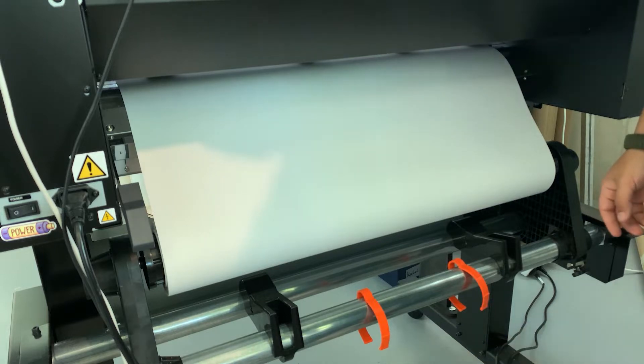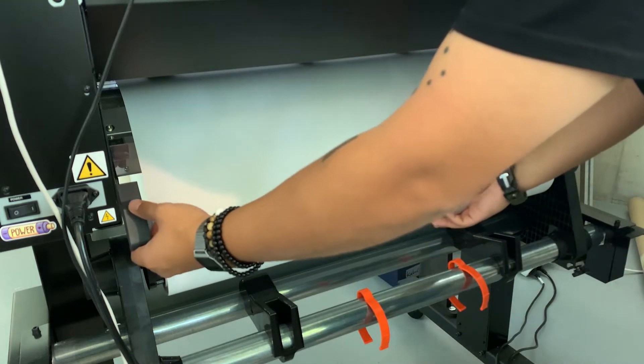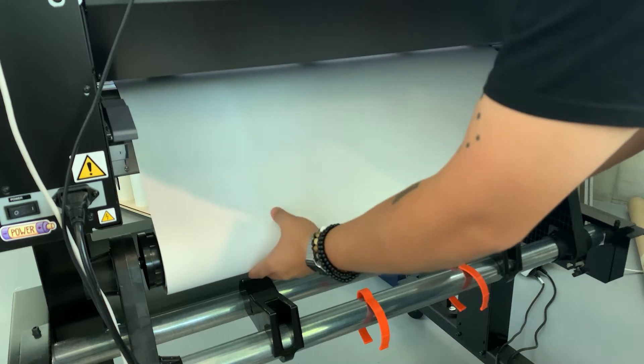On the back of the printer we'll unlock the roll by raising the lever on the back, and then we'll roll out the previous material, locking it with brackets afterwards.